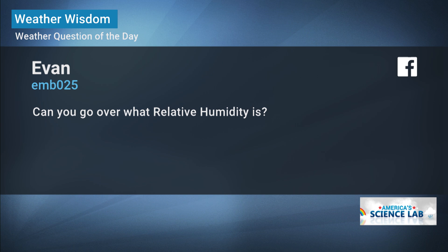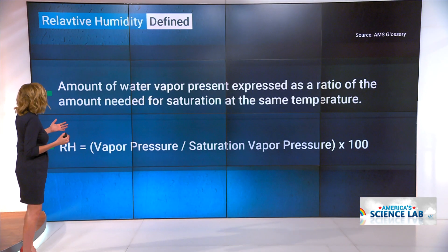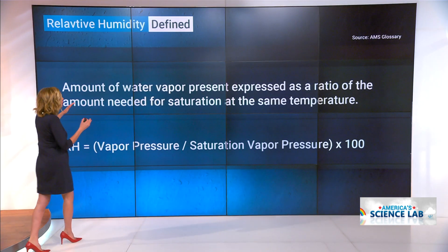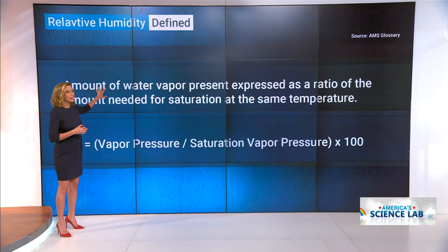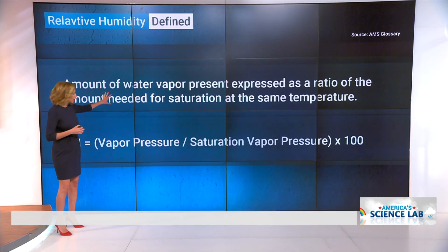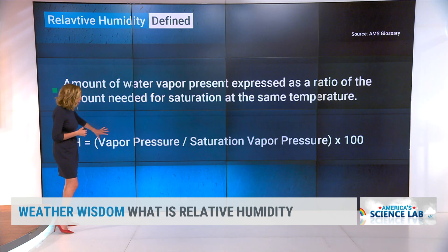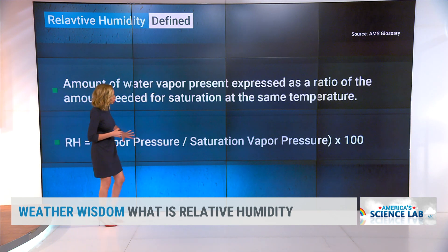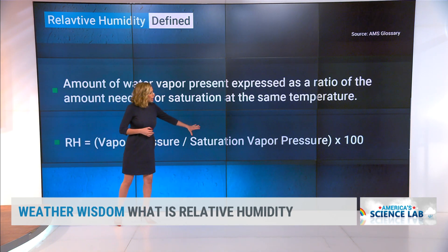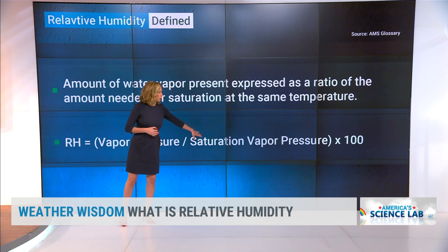Relative humidity is the amount of water vapor present in the atmosphere. And this is how it's expressed mathematically: relative humidity is the vapor pressure over saturation vapor pressure, times 100.